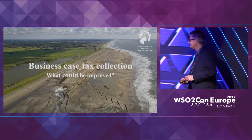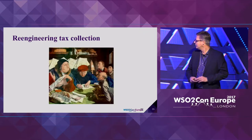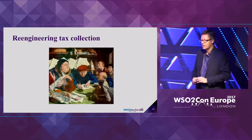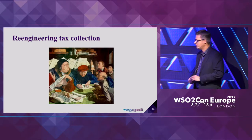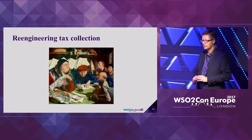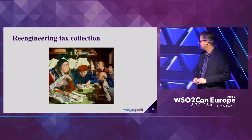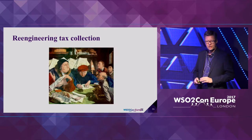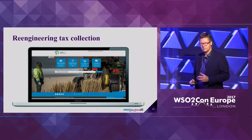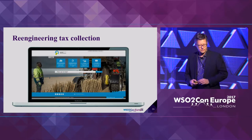Let's have a look at the business case — what could be improved? When we look at our former tax process, we could say it was a manual, partially manual process with a lot of physical paperwork stored in cases. After re-engineering our process, we went to a digital, demand-driven process in a digital front office.